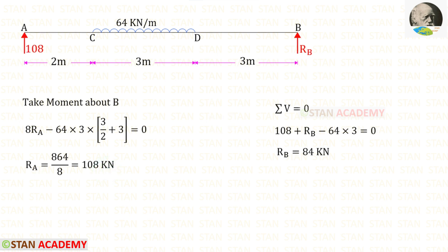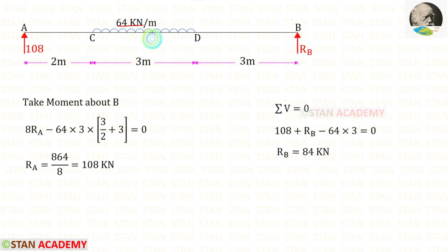Now let us apply the rule Sigma V equals 0 and find RB. RA and RB are acting upwards, so both are positive. The uniformly distributed load is acting downwards, so it will be negative, and the distance is 3. For RB, we get 84 kilo Newton.